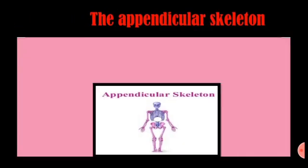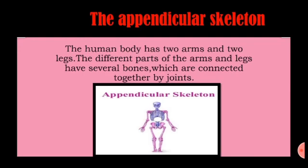The appendicular skeleton is made up of bones of the upper and lower limbs on either side of the central axis. The human body has two arms and two legs. The different parts of the arms and legs have several bones which are connected together by joints.